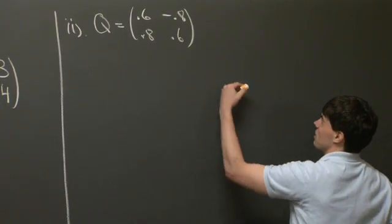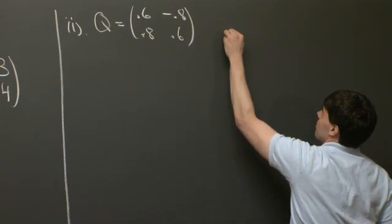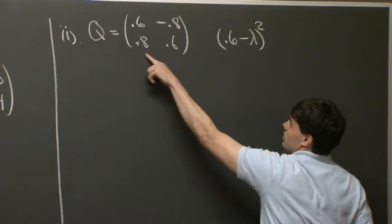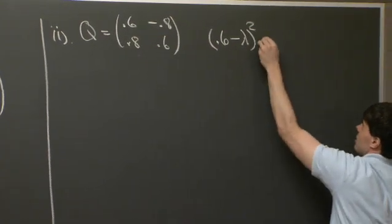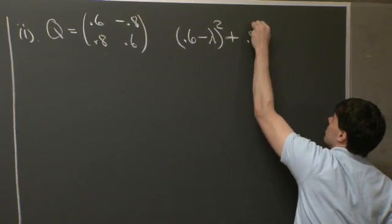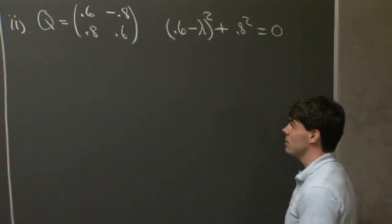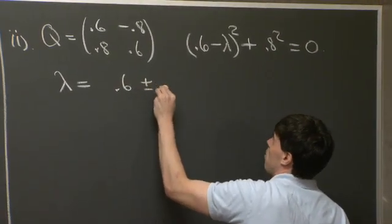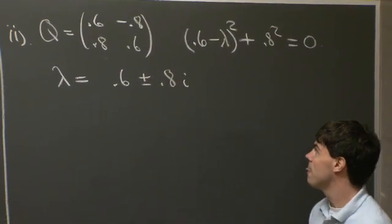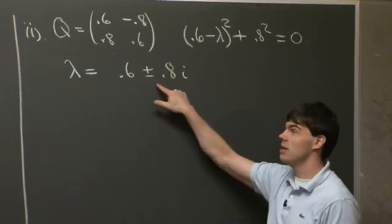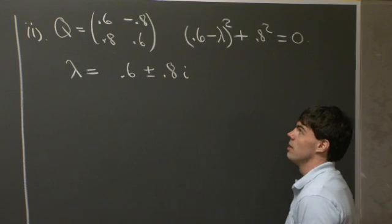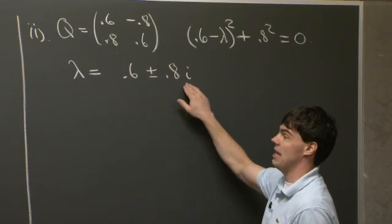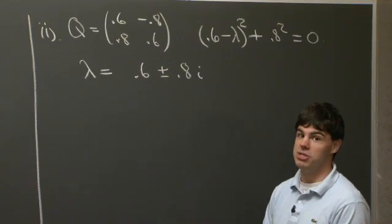The characteristic equation gives (0.6 minus lambda) squared plus 0.8 squared equals 0. Solving this, lambda equals 0.6 plus or minus 0.8i, where i is the imaginary number. The eigenvalues come in complex conjugate pairs, which is always the case for a real matrix. We find the eigenvector for lambda = 0.6 + 0.8i first, then the second eigenvector is just the complex conjugate of the first.